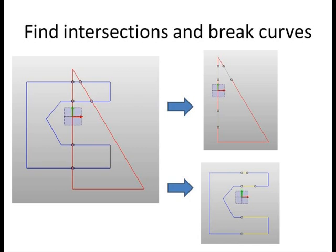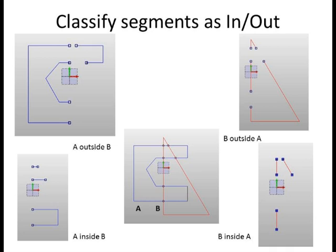The next step is to separate these segments into four categories: A outside B, A inside B, B outside A, and B inside A. This will require firing multiple rays and counting intersections. You can see the segments here broken up into their respective categories.